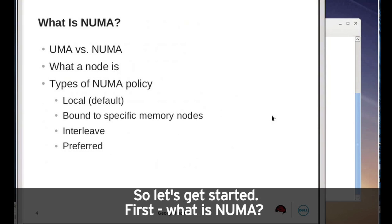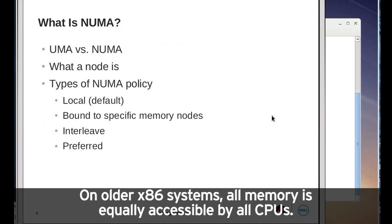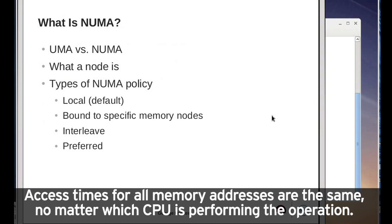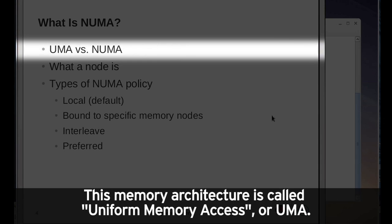So let's get started. First, what is NUMA? On older x86 systems, all memory is equally accessible by all CPUs. Access times for all memory addresses are the same, no matter which CPU is performing the operation. This memory architecture is called Uniform Memory Access, or UMA.